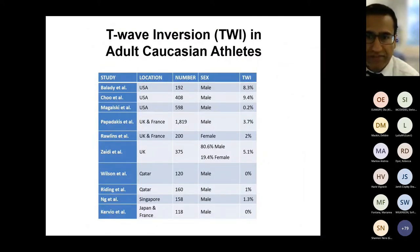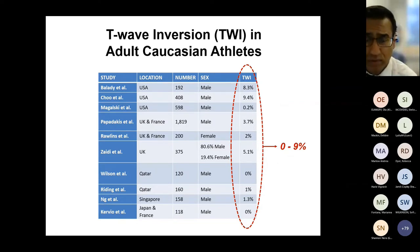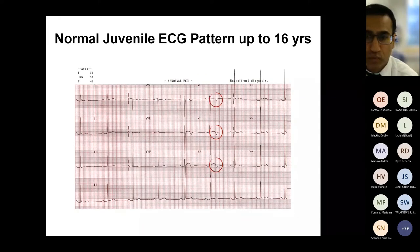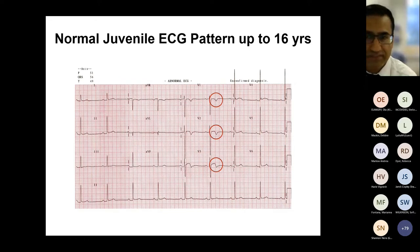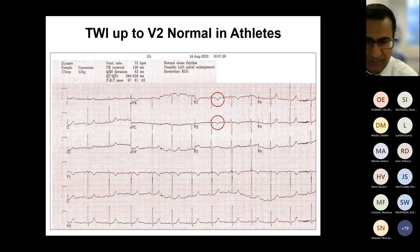This is data from various studies throughout the world in adult Caucasian athletes, and we can see the prevalence of T-wave inversion is anywhere from zero to nine percent — so not that infrequent. However, T-wave inversion can be a normal finding in an athlete; for example, this 14-year-old athlete has T-wave inversion in V1 to V3, which is the normal juvenile ECG pattern. The pediatric population often exhibit T-wave inversion in the right precordial leads, reflective of the right-sided dominance that exists during development. We now also know that T-wave inversion up to V2 is a normal finding in athletes.